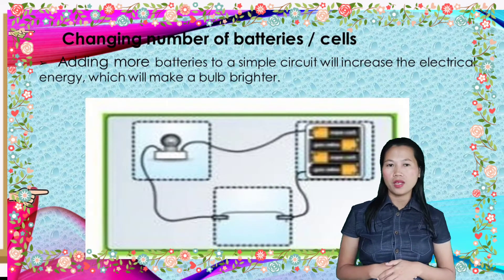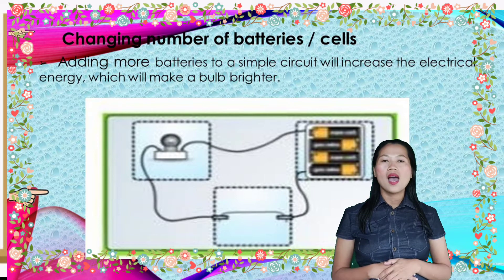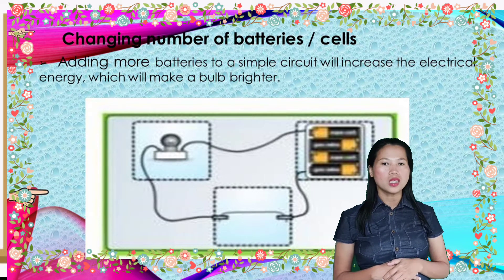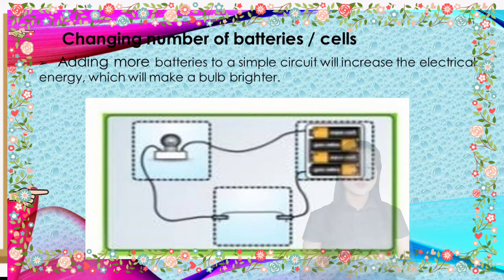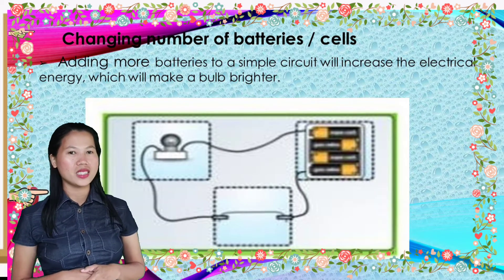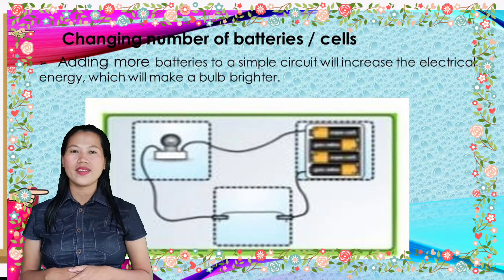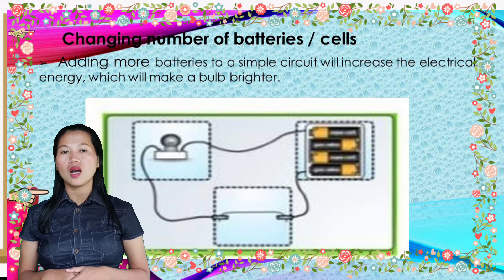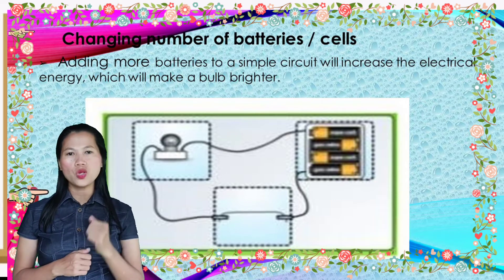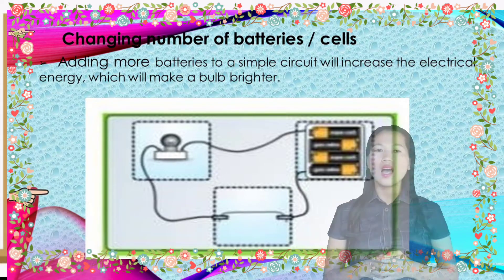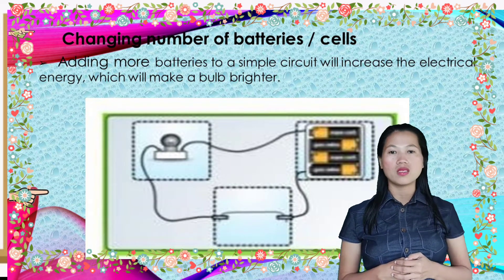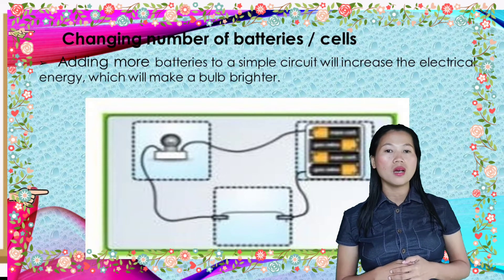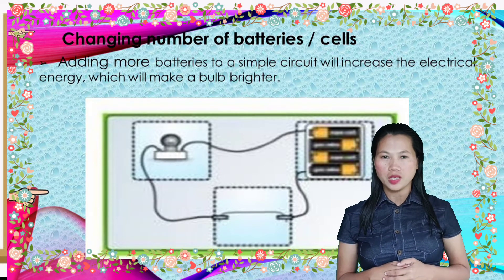Changing the number of batteries or cells: adding more batteries to a simple circuit will increase the electrical energy, which will make a bulb brighter. As more batteries are added in series, more current is available and the bulbs become brighter. When too many batteries are added, the current is so great that the bulb may blow or fuse because too much heat is made and the filament burns out.